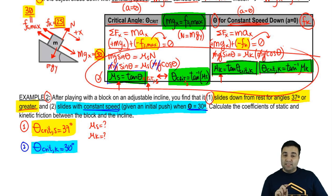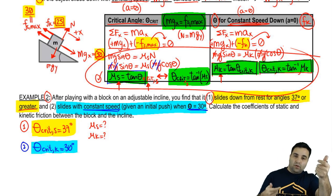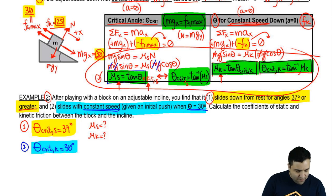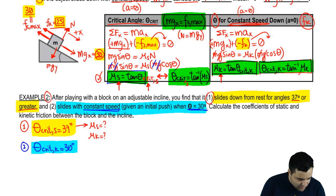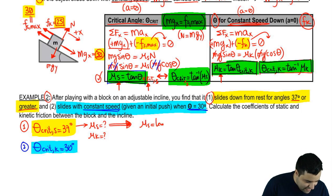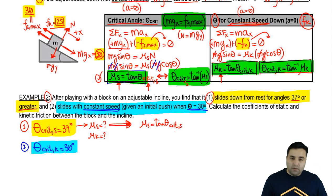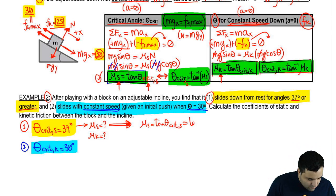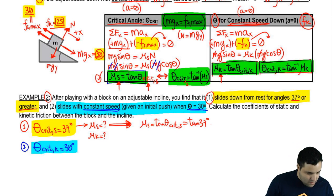Since we already derived equations linking critical angle and coefficient of friction, we can use them directly. Mu-static equals the tangent of theta-critical-static, which is the tangent of 37 degrees.